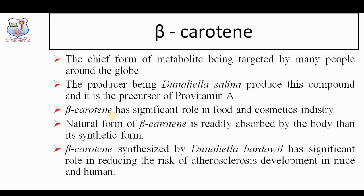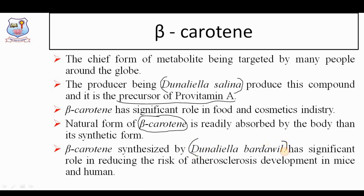One such important metabolite is beta-carotene, targeted by many people around the globe. The most common producer is Dunaliella salina, a most common marine microalga. Beta-carotene is an important precursor of pro-vitamin A and has a significant role in food and cosmetics industries. The natural form of beta-carotene is more readily absorbed by the body than the synthetic form. Beta-carotene synthesized by Dunaliella bardawil has a significant role in reducing the risk of atherosclerosis development in mice as well as human beings.